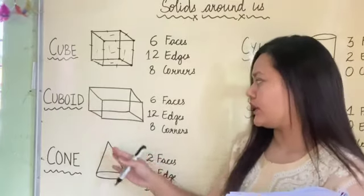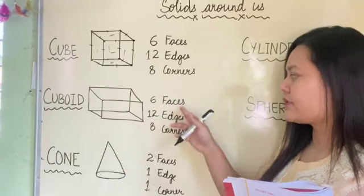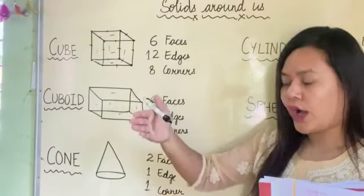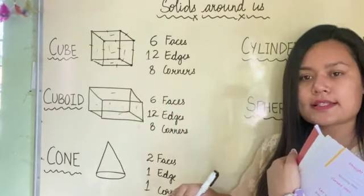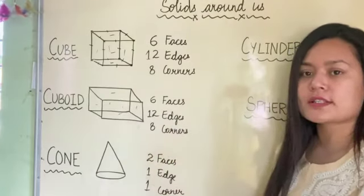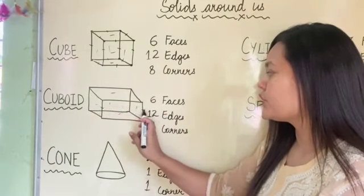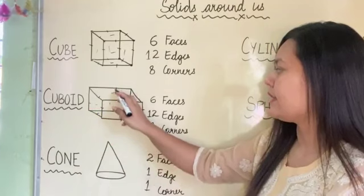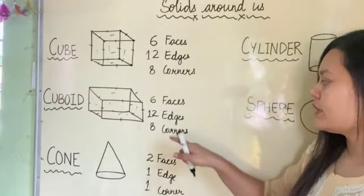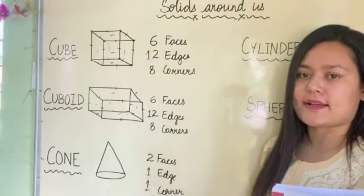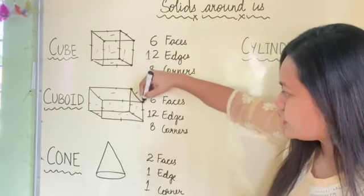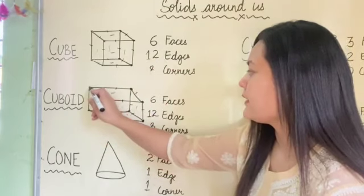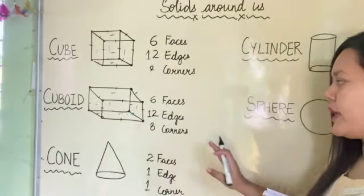Our next solid shape is cuboid. A cuboid has how many faces? Six faces - one, two, three, four, five and six. How many edges? Twelve edges - one through twelve. And it has also eight corners. Very good. This is a cuboid.